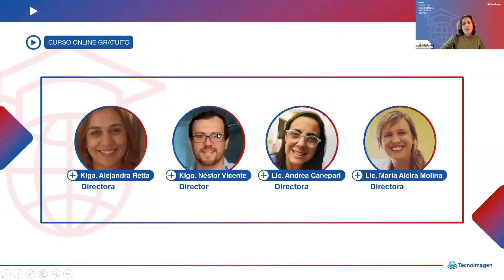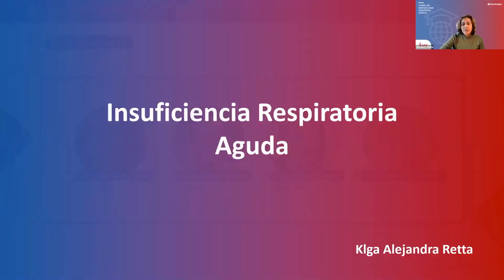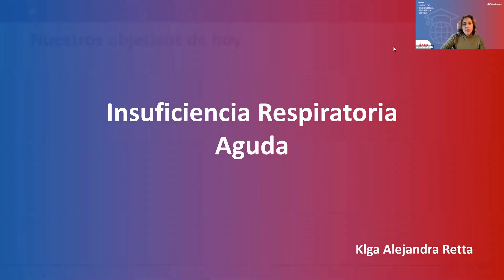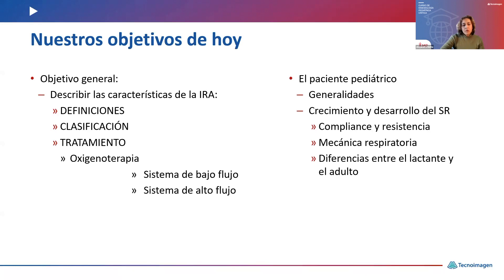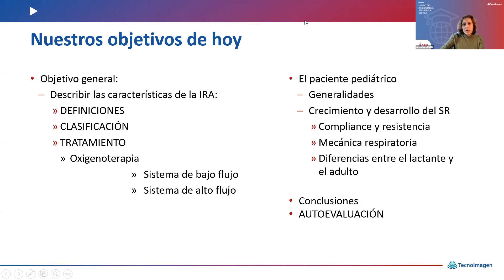Vamos con nuestro equipo de trabajo e insuficiencia respiratoria aguda. Nuestros objetivos de hoy: el objetivo general es describir las características de la insuficiencia respiratoria aguda — definiciones, clasificación, tratamiento — fundamentalmente orientado a la oxigenoterapia con sistemas de bajo flujo y de alto flujo. También pondremos hincapié en algunas generalidades del paciente pediátrico: crecimiento, desarrollo del sistema respiratorio, compliance, resistencia, mecánica respiratoria, y las diferencias entre el lactante y el adulto. Vamos a cerrar con conclusiones y una autoevaluación.